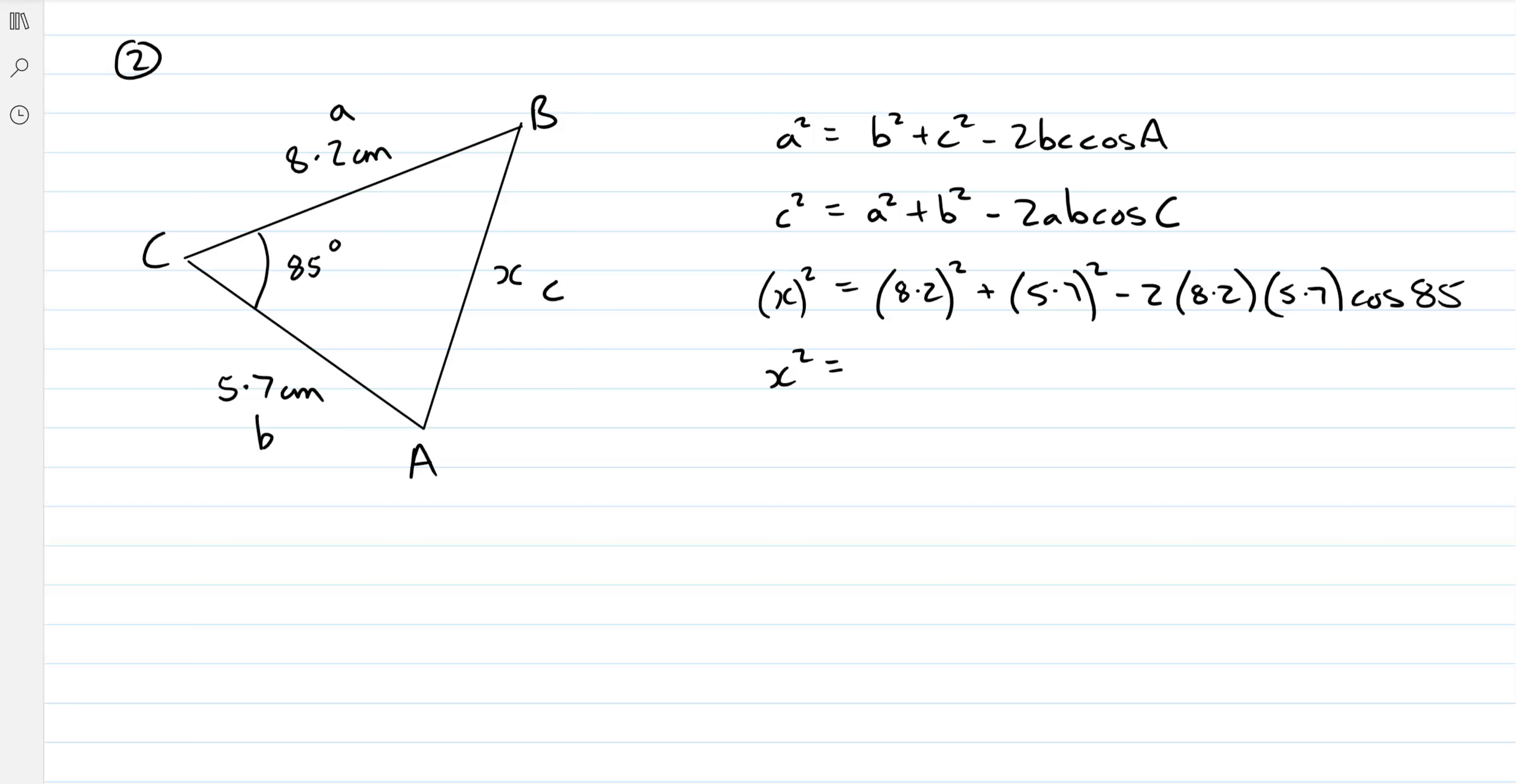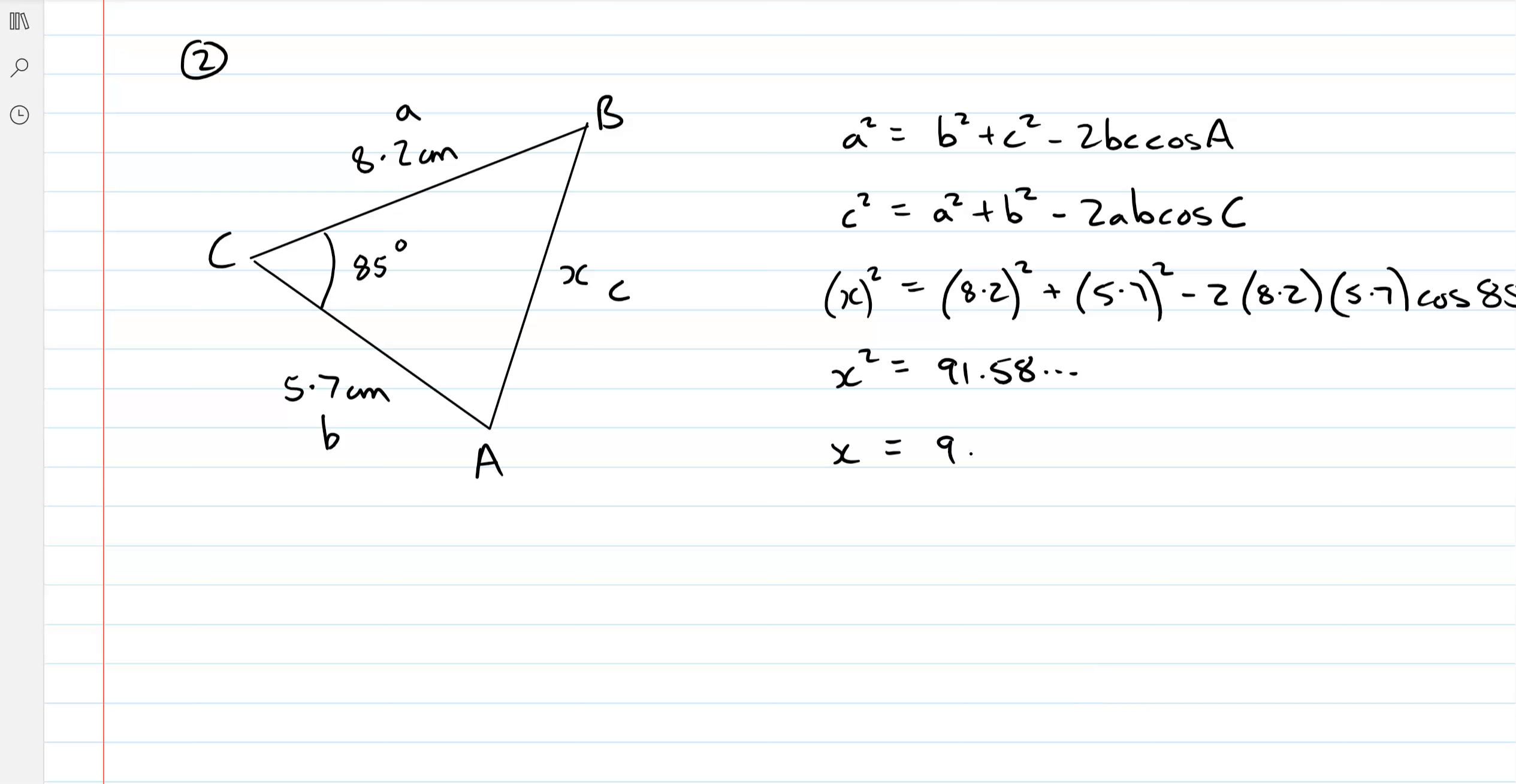So x squared equals, this time I'll do this a little bit quicker. I'm just going to put all this into my calculator, let my calculator do the hard work. 8.2 squared plus 5.7 squared minus 2 times 8.2 times 5.7 cos 85. You get 91.58. Remember this is x squared, not x. So square root both sides. Square root of 91, 9.569, and then round it. So 9.57 centimeters to 3 significant figures. Question 2 done.